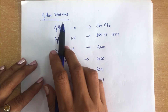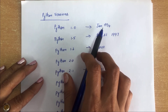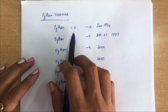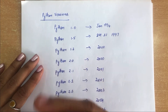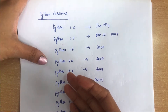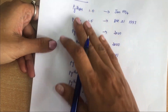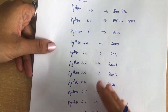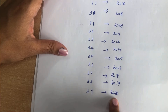Coming to the versions of Python. Python 1.0 was released in January 1994 by Guido van Rossum. Since Python is used in every technical field, it is updated regularly with new features. There have been many updates from 1994 to the present. Currently, we are using Python 3.9, which was released recently in 2020.